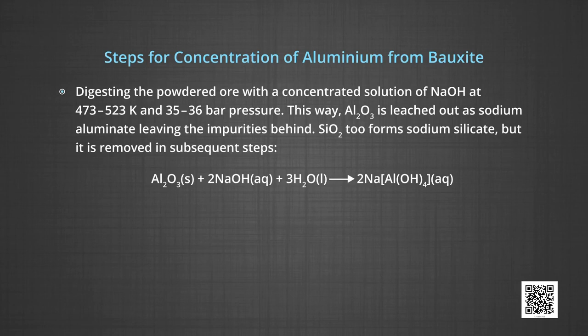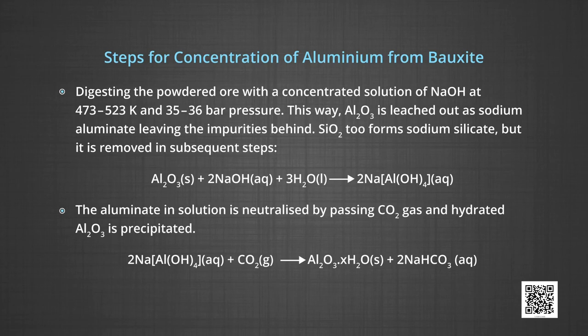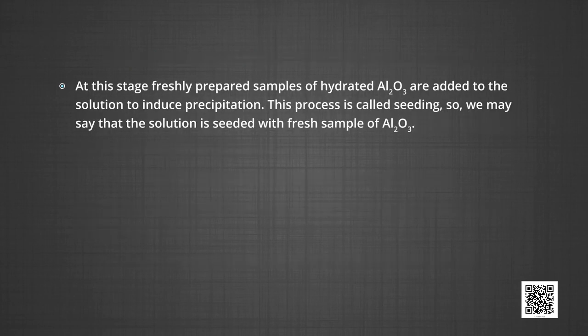Concentration is carried out in the following steps. The first step is digesting the powdered ore with a concentrated solution of sodium hydroxide at 473 to 523 Kelvins and 35 to 36 bar pressure. This way, alumina is leached out as sodium aluminate, leaving the impurities behind. Silica also forms sodium silicate, but it is removed in subsequent steps. In the second step, the aluminate in the solution is neutralized by passing carbon dioxide gas and hydrated alumina is precipitated. At this stage, freshly prepared samples of hydrated alumina are added to induce precipitation — this process is called seeding.